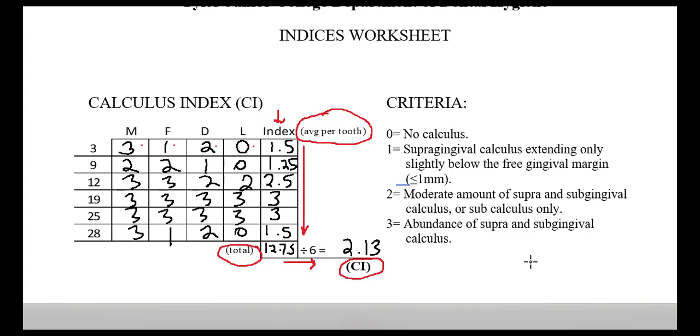For instance, our overall calculus index is 2.13. That tells me that this patient has a moderate amount of supra and subgingival calculus. If your number is higher than three, you've calculated incorrectly because the highest that the calculus index could be is three. So you'll want to go back and revisit your calculations if you get anything above three.